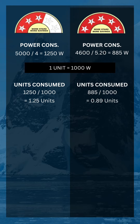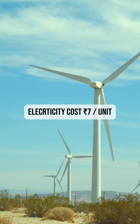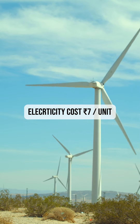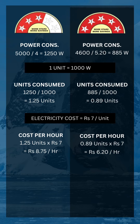Now let's calculate the electricity cost at ₹7 per unit. The 3-star AC will cost you ₹8.75 per hour, while the 5-star AC would cost you ₹6.2 per hour.